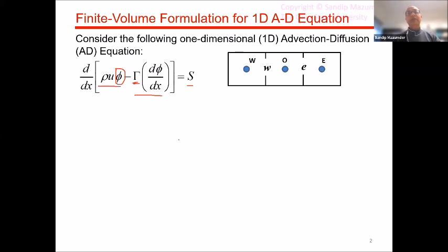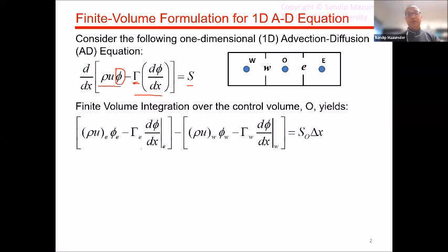When we do a finite volume integration, this is what we end up getting. Essentially it's a flux conservation equation. This is the advective flux on the eastern face, the diffusive flux on the eastern face, the advective flux on the western face, and the diffusive flux on the western face. We subtract the two and we get what's produced inside the control volume — the source term.